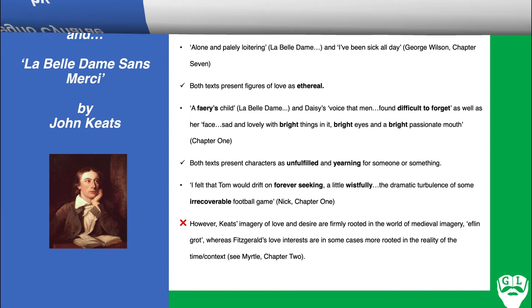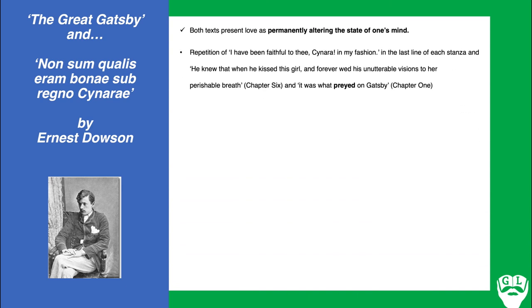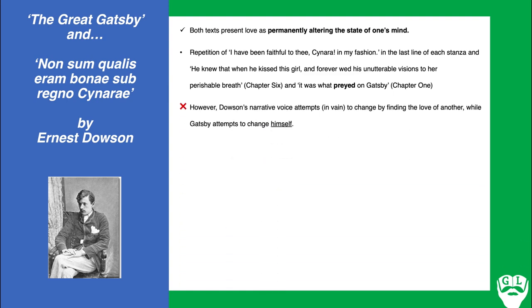The final poem I want to compare The Great Gatsby to is 'Non Sum Qualis Eram Bonae Sub Regno Cynarae' by Ernest Dowson. Both texts present love as having a permanently altering state on one's mind — the narrative voice in Dawson repeats 'I have been faithful to thee, Cynara, in my fashion,' the last line of each stanza, transfixed on this Cynara figure. We also see how what preyed on Gatsby — 'he knew that when he kissed this girl, Daisy, and forever wed his unutterable visions to a perishable breath' — his first kiss with Daisy transfixes and permanently transforms him. However, a key difference: Dawson's narrative voice attempts in vain to change by finding the love of another, while Gatsby attempts to change himself.